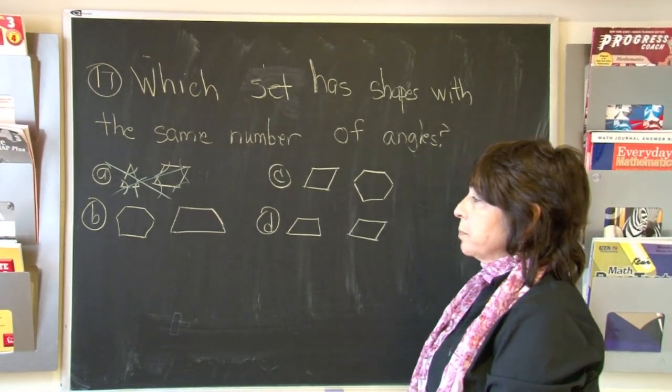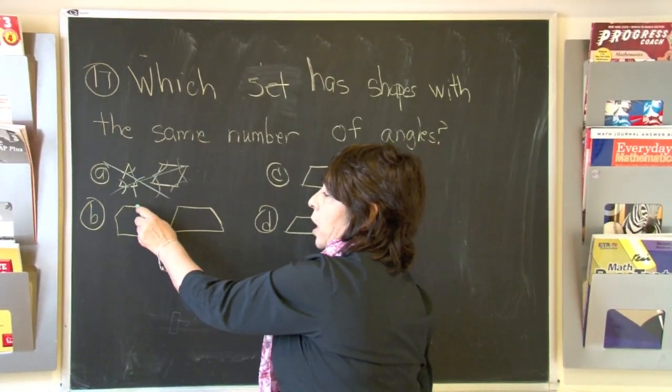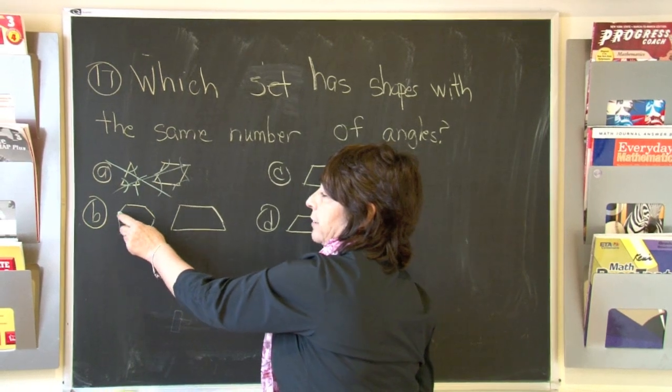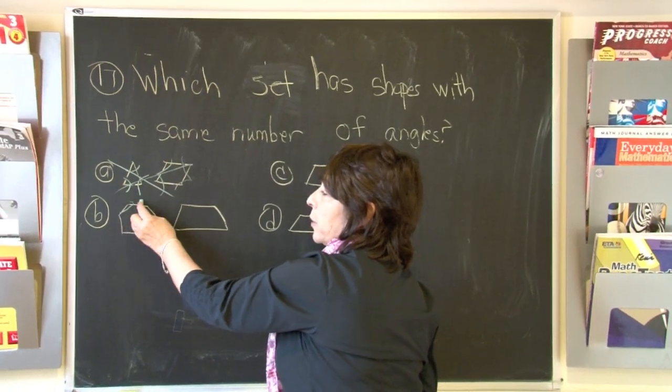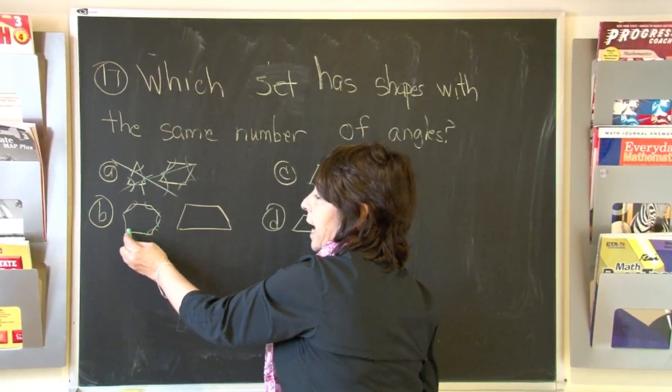Let's look at choice B. We have a hexagon. One, two, three, four, five, six. Which means we are going to have six angles.